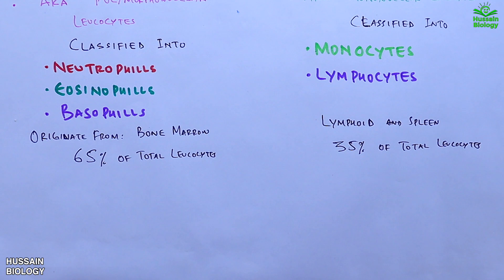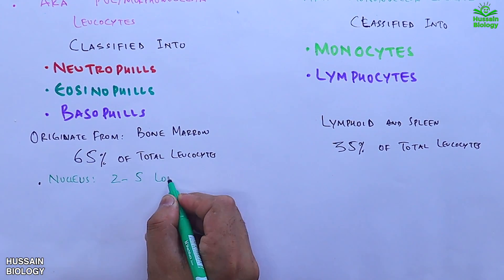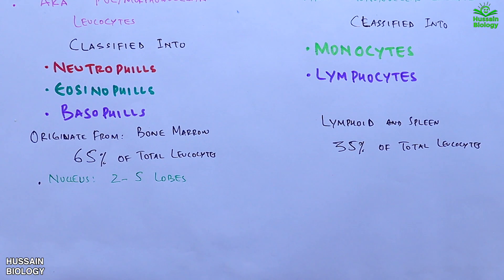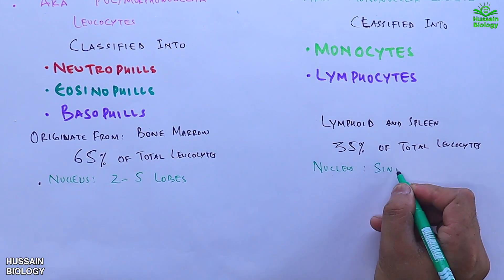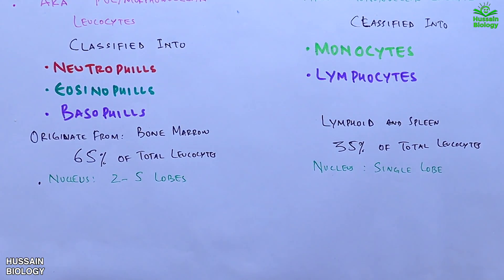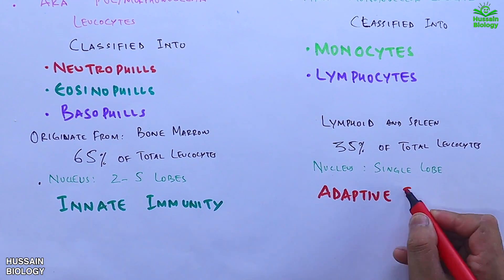In terms of structure, the granulocyte nucleus has two to five lobes, whereas agranulocytes have a nucleus with a single lobe. Finally, granulocytes are involved in innate immunity, whereas agranulocytes are involved in adaptive immunity.